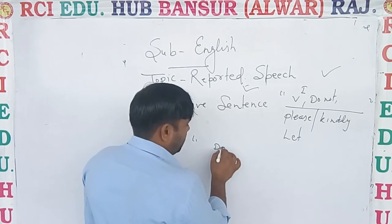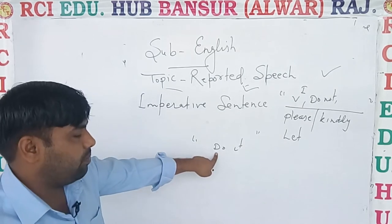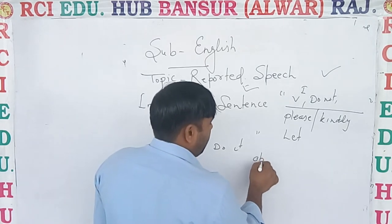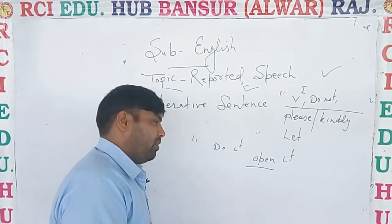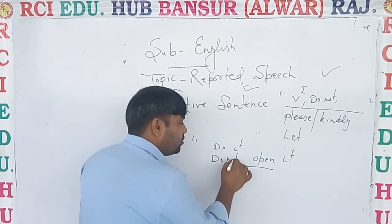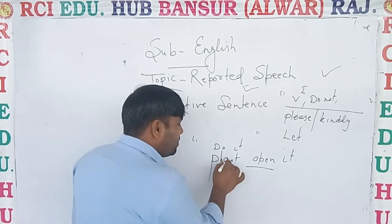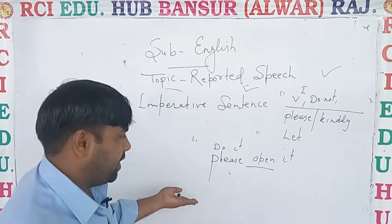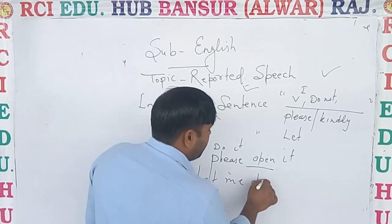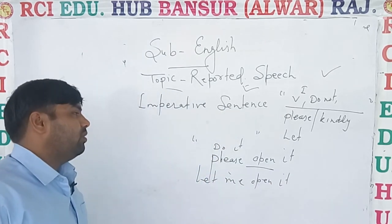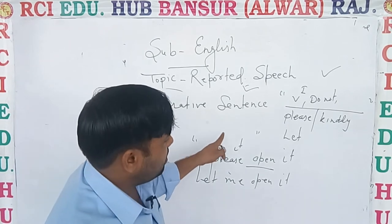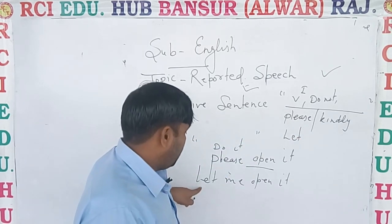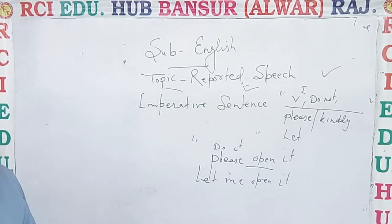For example: 'Do it' — first form, imperative. 'Open it' — first form, imperative. 'Don't open it' or 'Do not open it' — imperative. 'Please open it' — imperative. 'Let me open it' — imperative. So dear student, if any sentence starts with the first form, 'do not', 'please/kindly', or 'let', then it will be imperative.